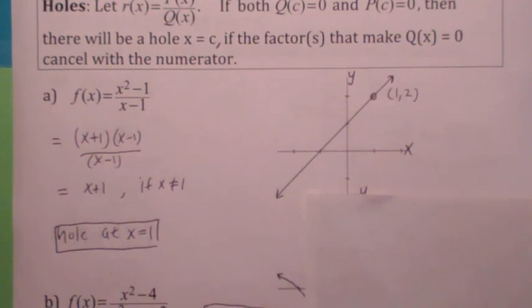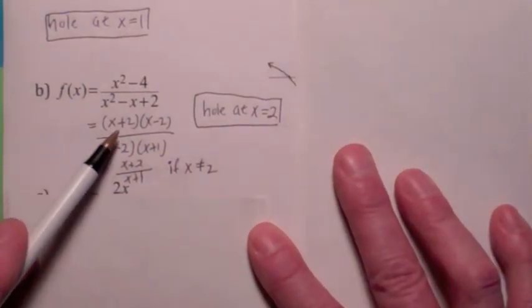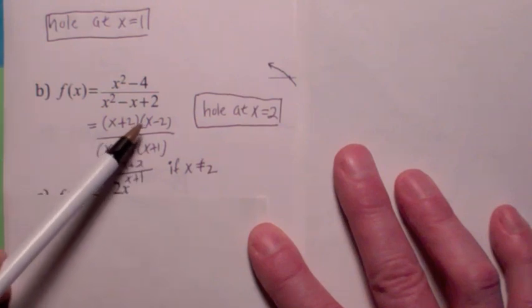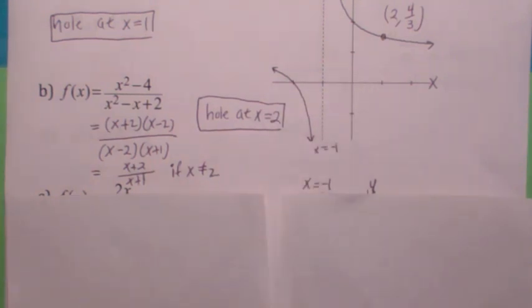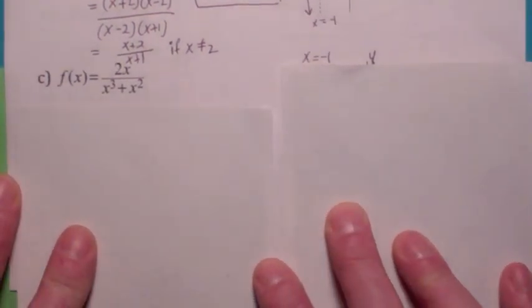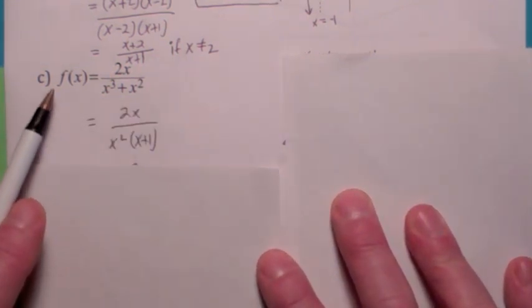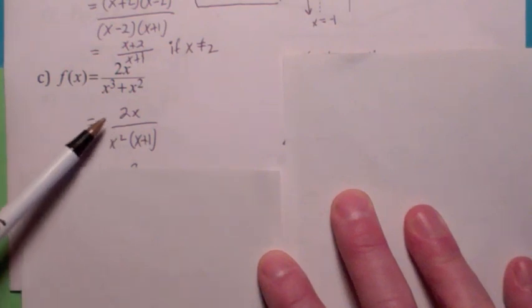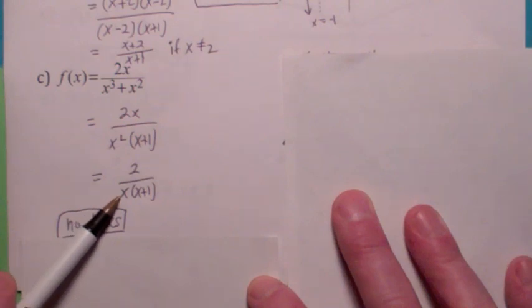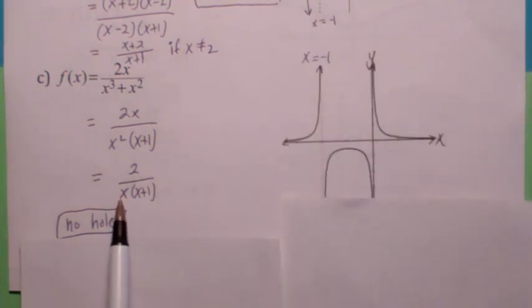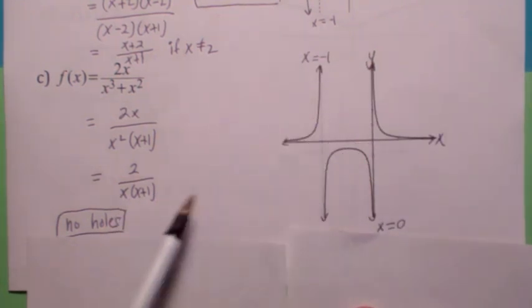Hole at x equals 1. In another example, factoring gives x plus 2 times x minus 2 over x minus 2 times x plus 1 — the x minus 2's cancel, giving a hole at x equals 2, not a vertical asymptote. But you still have x plus 1 in the denominator, so there's a vertical asymptote at x equals negative 1. In a third example, after factoring, an x cancels top and bottom but one x factor remains on the bottom, so it's actually a vertical asymptote at x equals 0, not a hole. You also get a vertical asymptote at x equals negative 1.